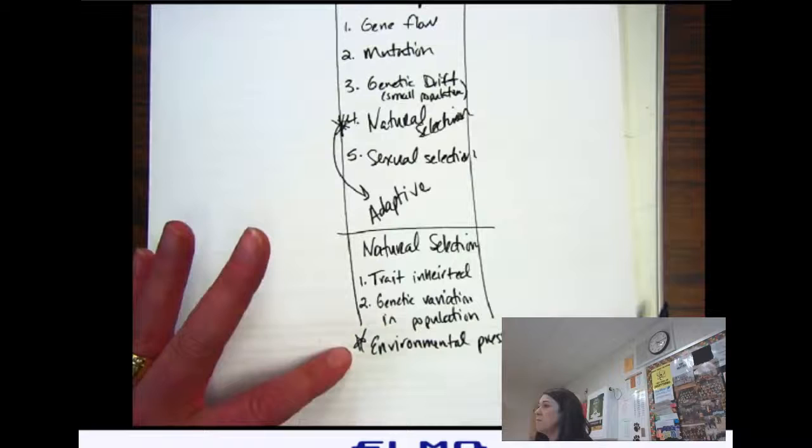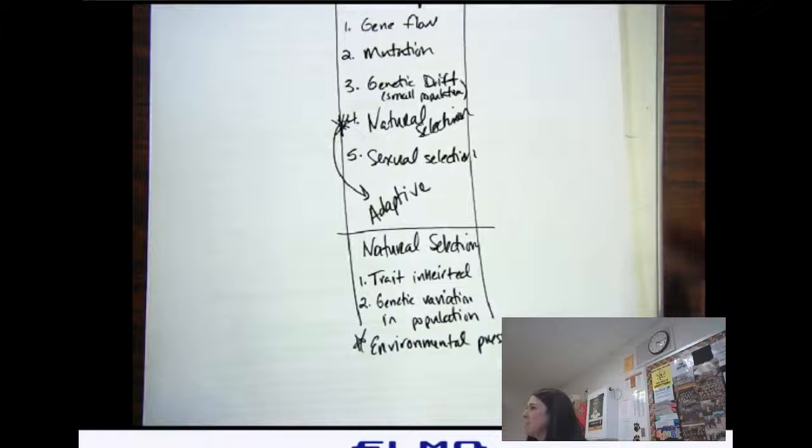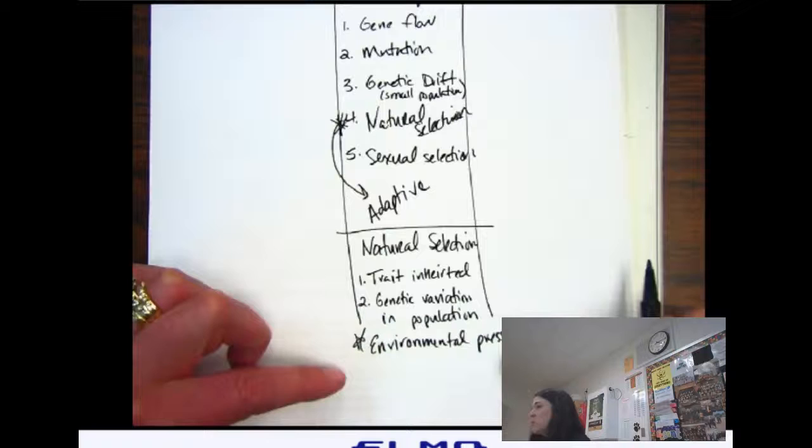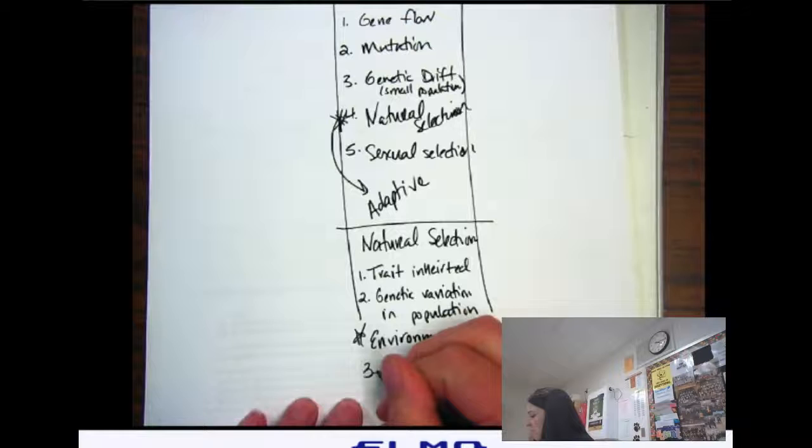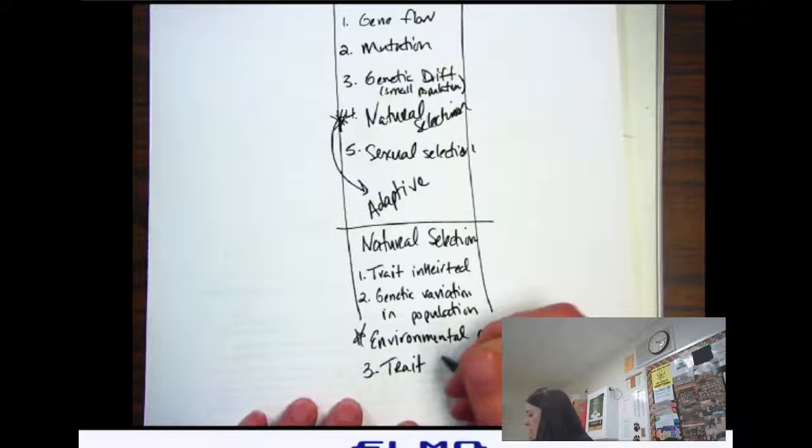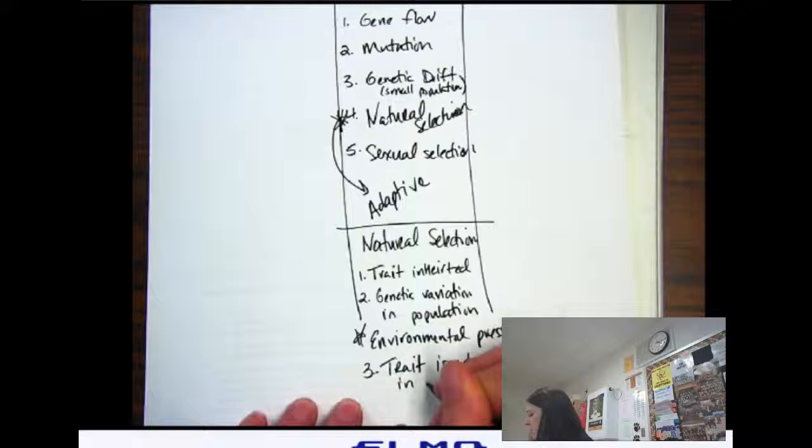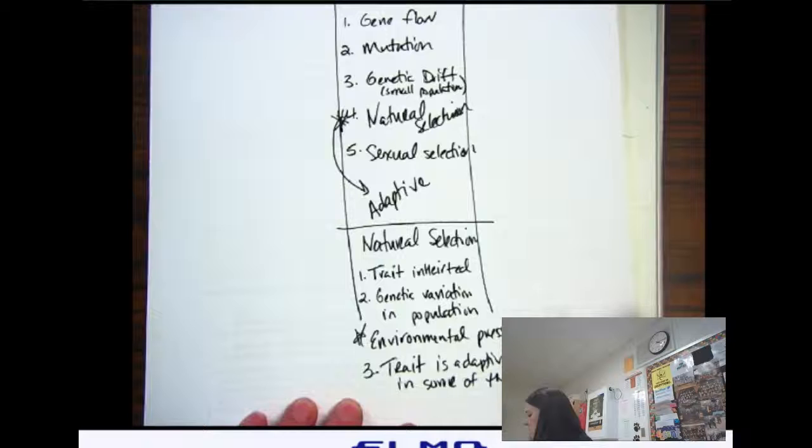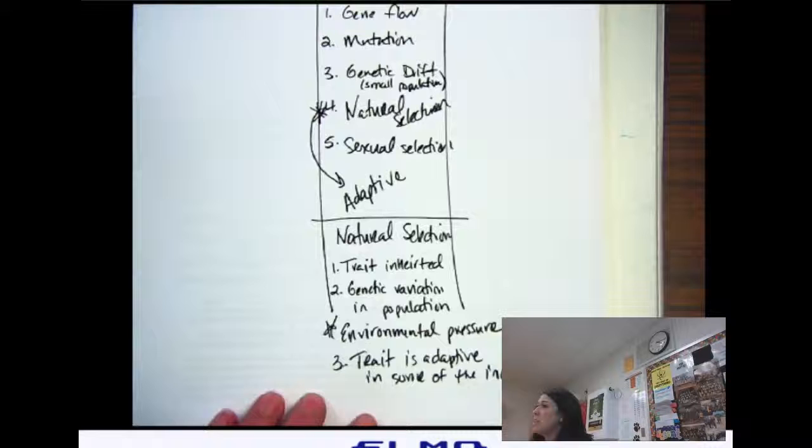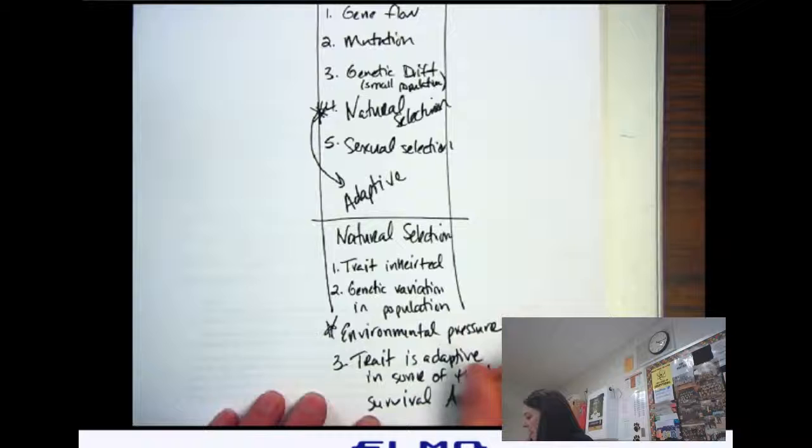Now we have an environmental pressure. That means that there's some environmental condition, it could be anything. And some in the populations have a trait that helps them survive in that environment better than others. So now we have some that have an adaptive trait.